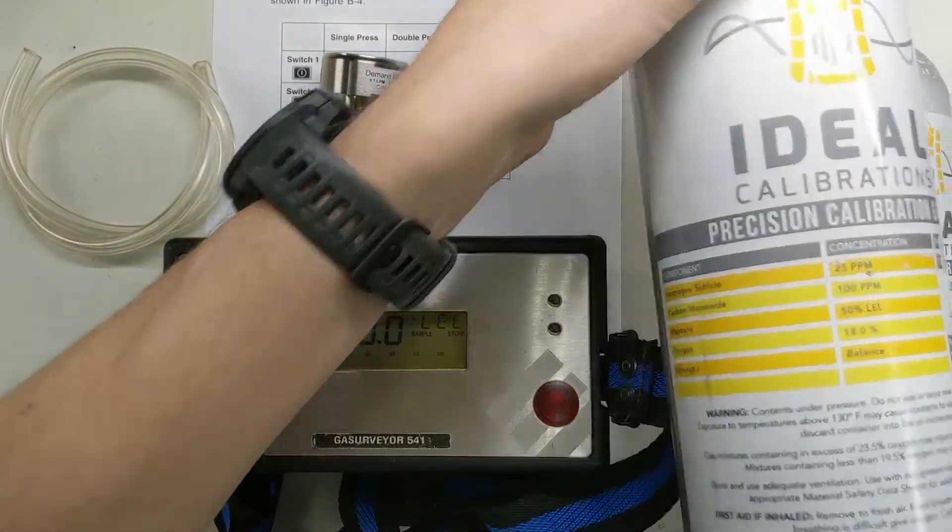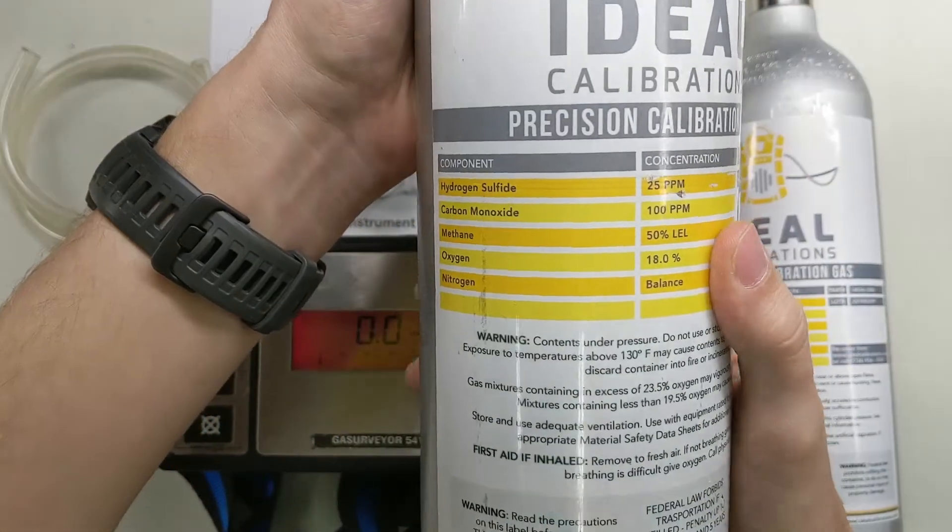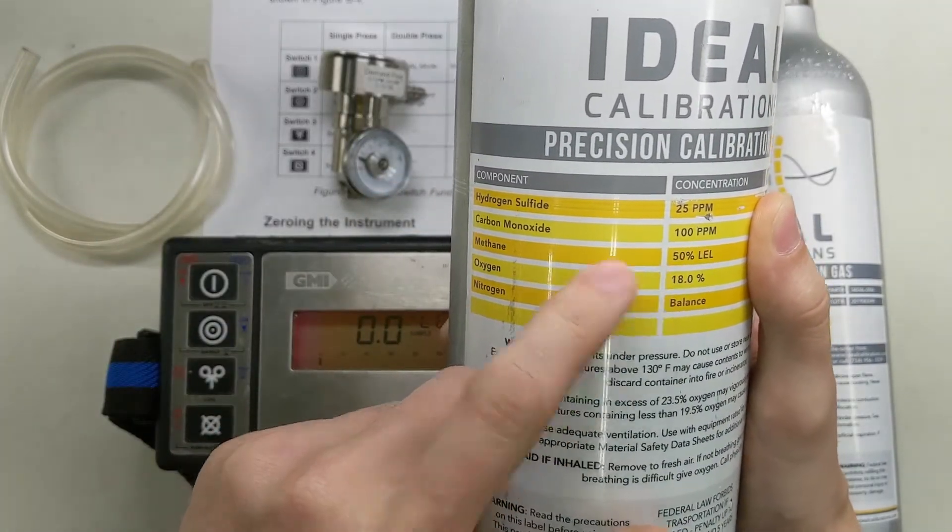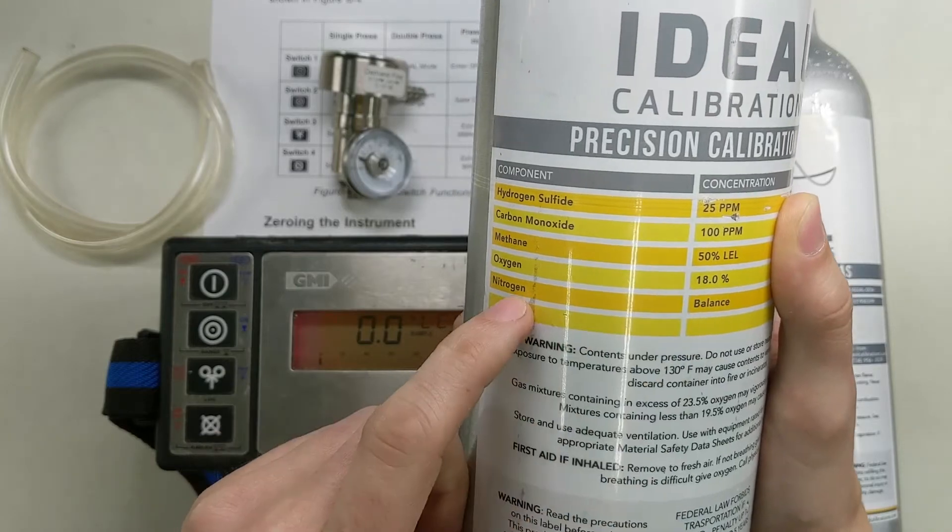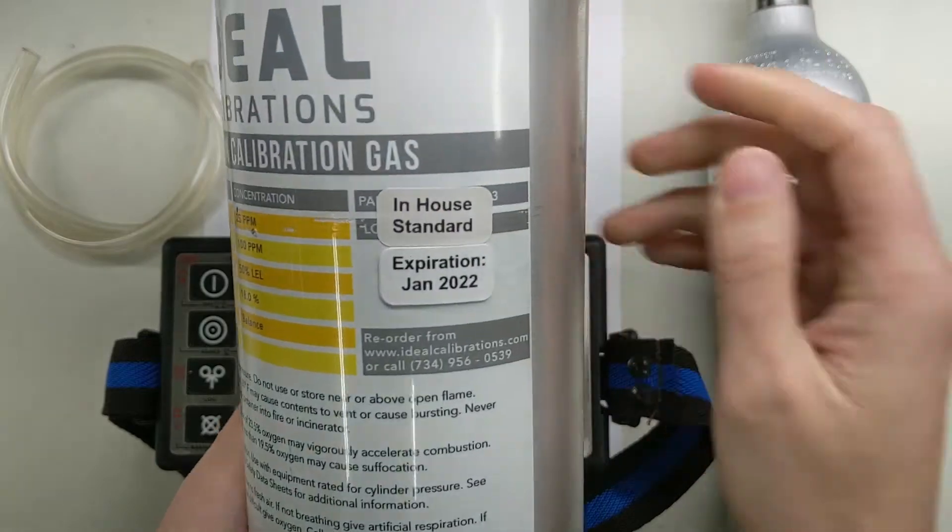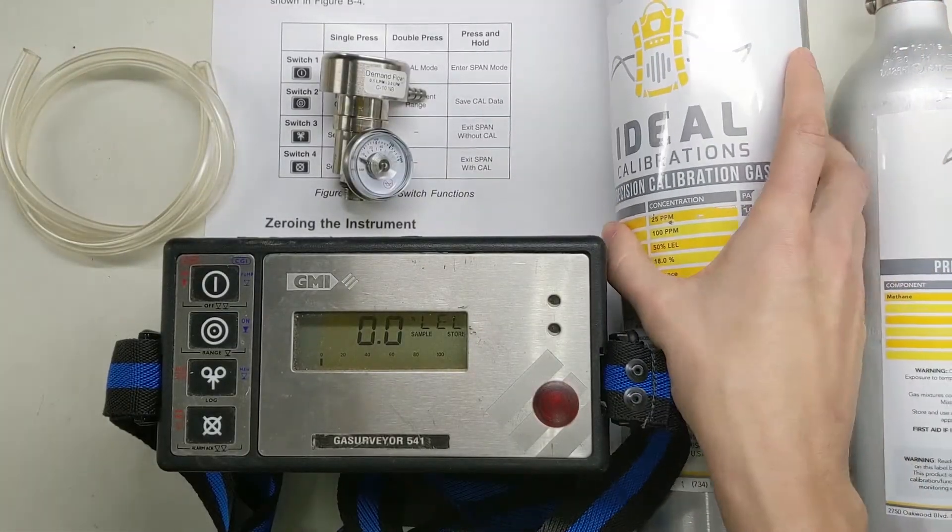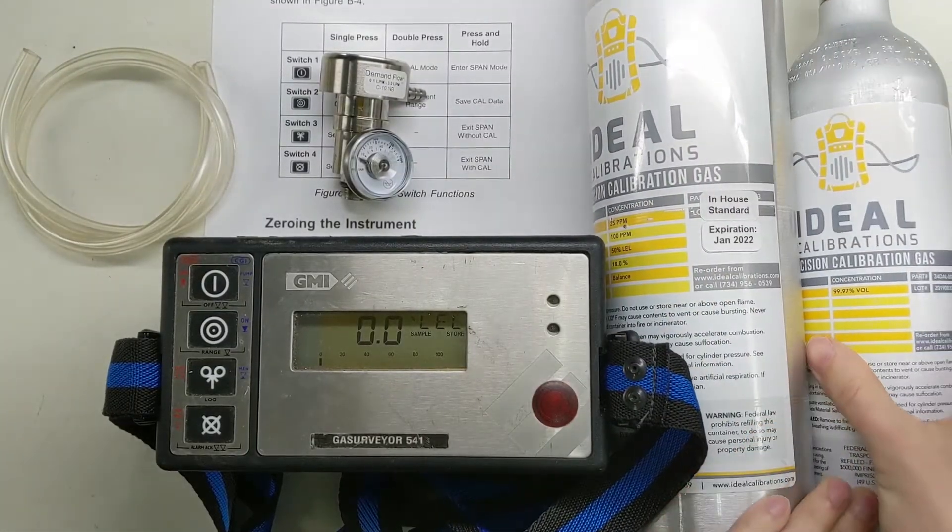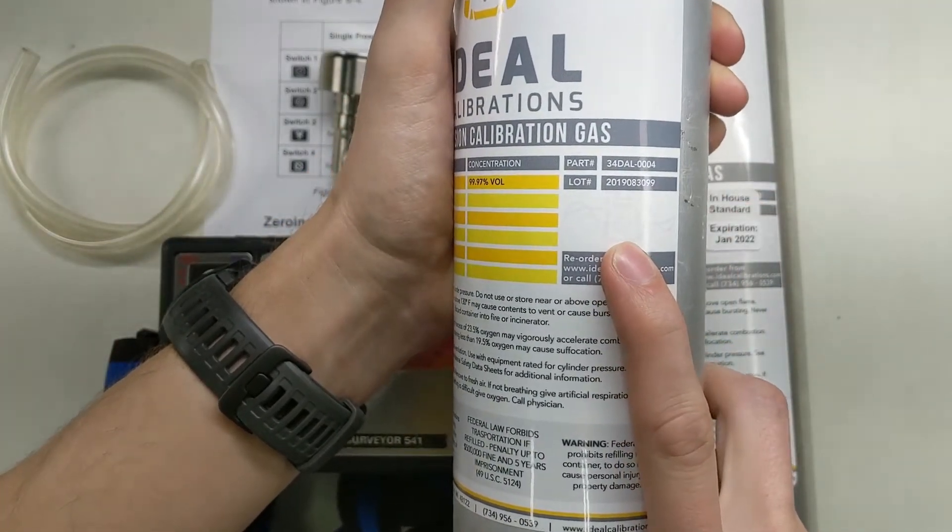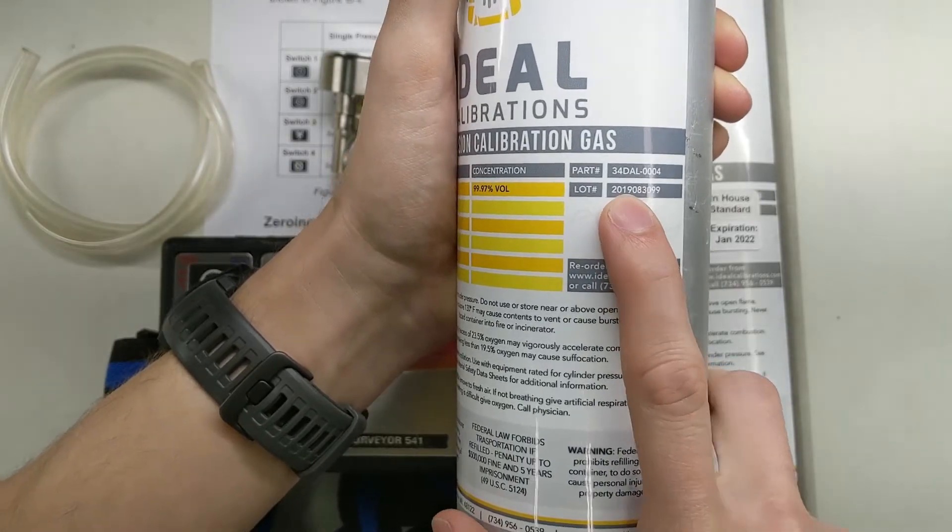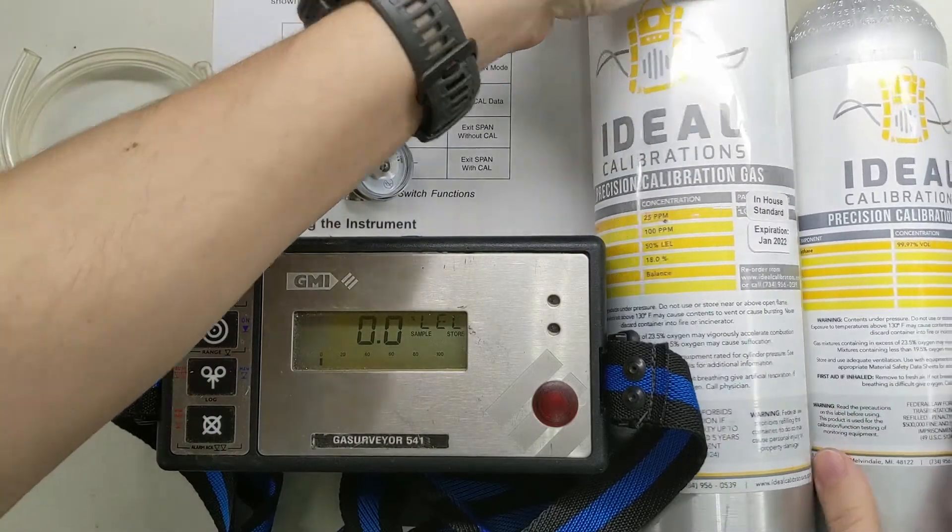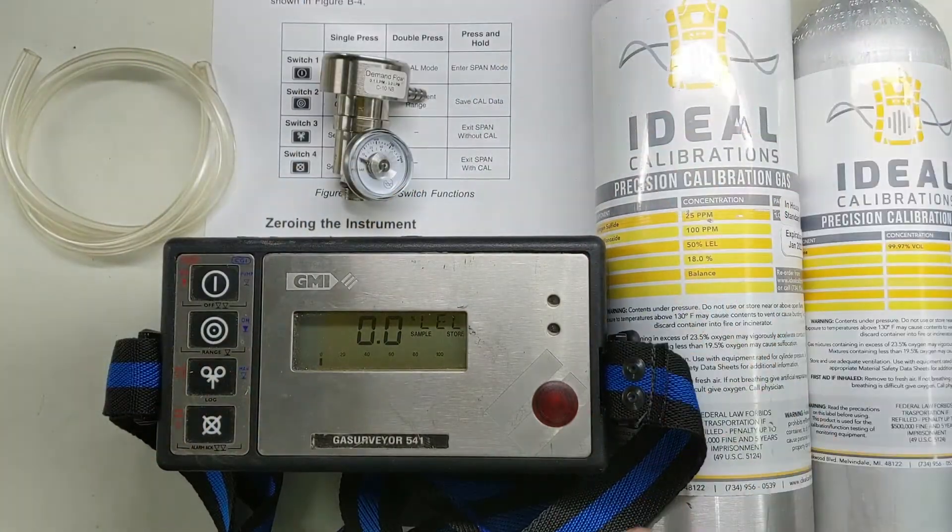Down here we've got another cylinder. This is 25 parts H2S, 100 parts CO, 50% LEL methane, and 18% oxygen with nitrogen balance. Check our expiration date and we are good to go. This one is well within expiration as well.